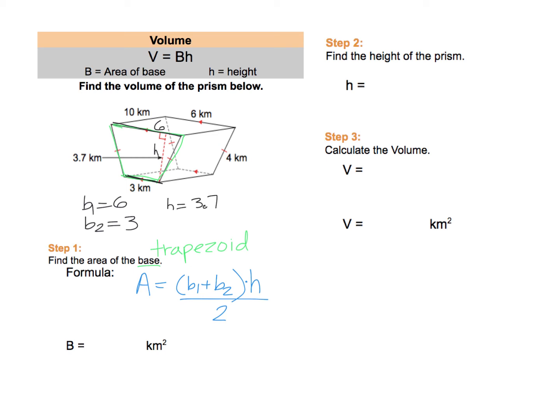And now we can stick those numbers into our area of a trapezoid formula. We need B1 plus B2, which is six plus three times H and H is 3.7. And then the whole thing is divided by two. Simplify inside the parentheses first. Six plus three is nine. So I'm just going to change that to a nine here. And then you can take your calculator and do nine times 3.7. Nine times 3.7 is 33.3. And then divide that by two. We wait to divide by two until the very end. Type that in your calculator and you'll end up with 16.65.